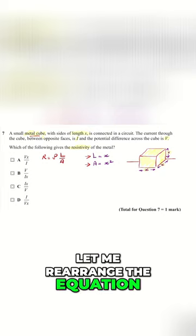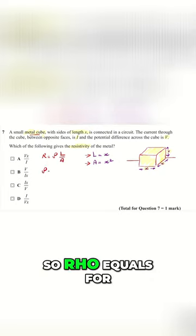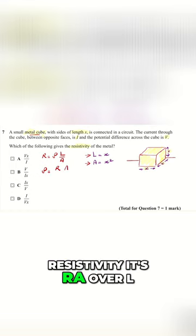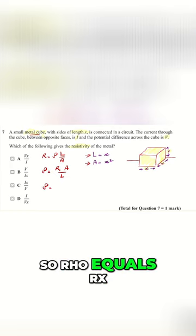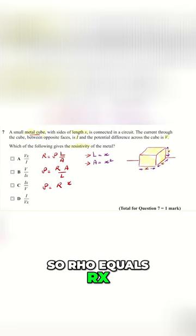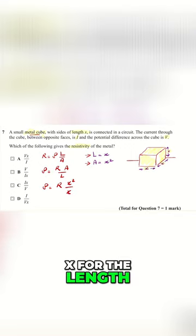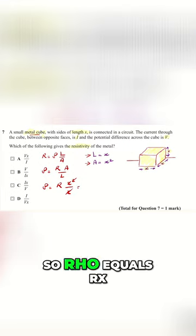Let me rearrange the equation so rho equals, for resistivity it's R A over L. So rho equals R x square for the cross-sectional area divided by x for the length. Then cancel out the square with the x, so rho equals R x.